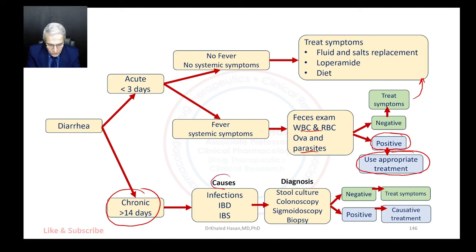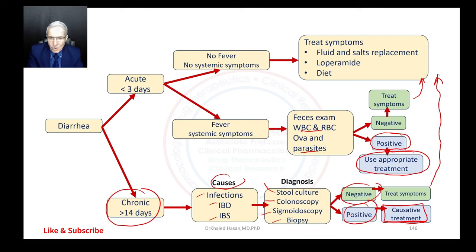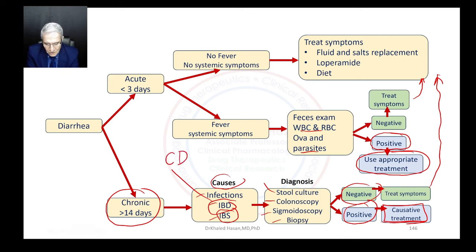For chronic diarrhea, we start thinking about causes — it could be infection, irritable bowel disease, or irritable bowel syndrome. We pursue diagnosis with stool culture, colonoscopy, biopsy, or sigmoidoscopy. If all results are negative, we treat symptoms. If positive, we treat based on the cause: antibiotics for infection, symptom management for irritable bowel syndrome, and specific treatment for Crohn's disease or ulcerative colitis — which we will discuss later.